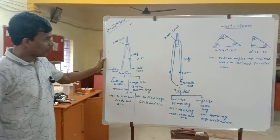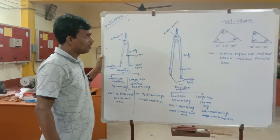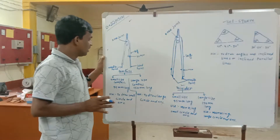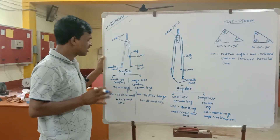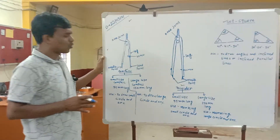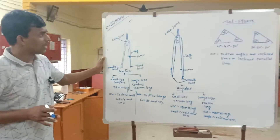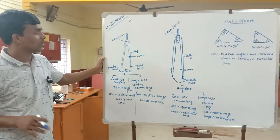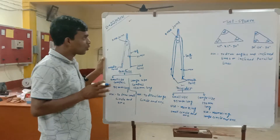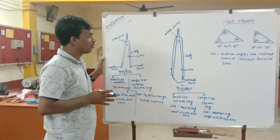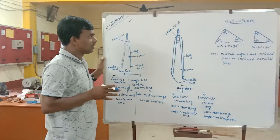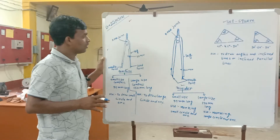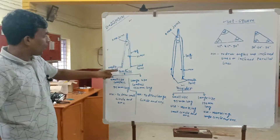The instruments are compass, divider, and set square. These are the total drawing instruments for class 5 to 10 level. The first instrument is the compass.